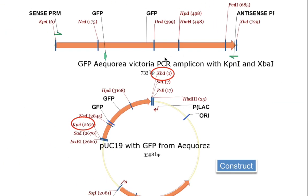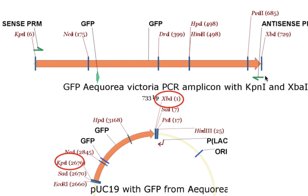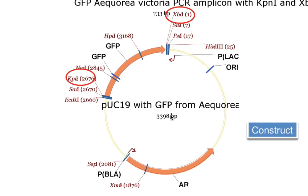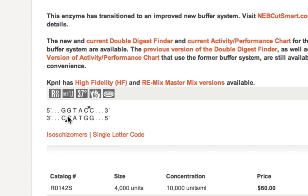KPN1 is at 413 base pairs and XPA1 at 424. The strategy is simple: we will take the GFP gene, design a forward primer with a tail containing the KPN1 site and a reverse primer with a tail containing the XPA1 site, then do PCR amplification. Once we have the PCR amplicon, we'll cut it with KPN1 and XPA1 and ligate it into PUC19, which we'll also cut with XPA1 and KPN1.